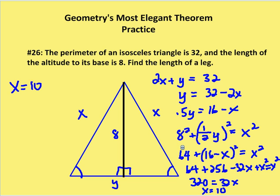That gives me 64 plus (16 minus X) squared equals X squared. Expanding: 64 plus 256 minus 32X plus X squared equals X squared. The X squared terms cancel. Adding 32X to both sides and combining constants: 320 equals 32X, so X equals 10. The leg of the isosceles triangle is 10.